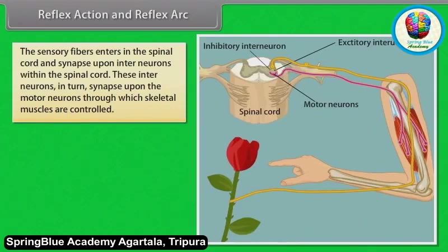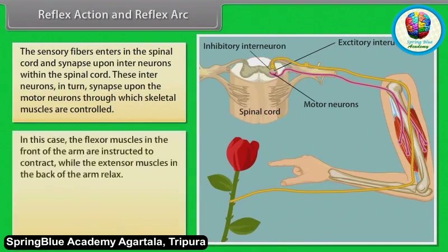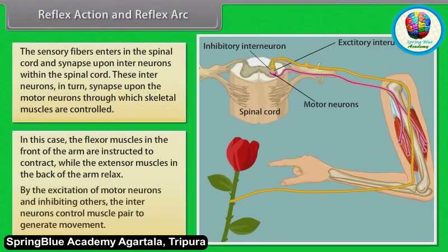These interneurons in turn synapse upon the motor neurons through which skeletal muscles are controlled. In this case, the flexor muscles in front of the arm are instructed to contract while the extensor muscles in the back of the arm relax. By exciting some motor neurons and inhibiting others, the interneurons control muscle pairs to generate movement.